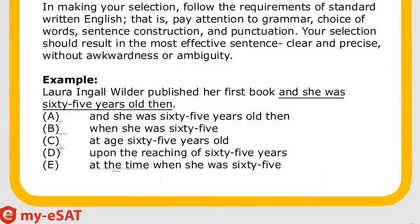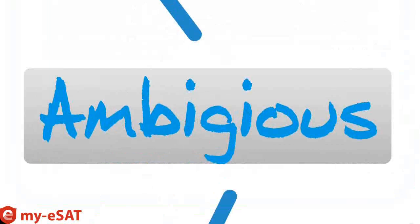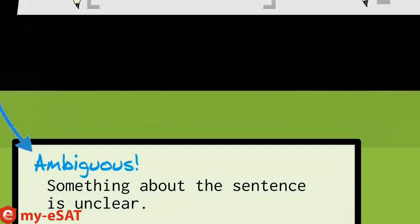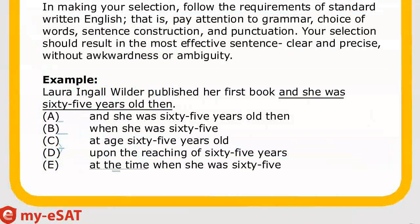Answer choices C and D are actually ambiguous. Ambiguous means there is something unclear about the sentence. Answer choice C and D don't tell you who is 65. Answer choice C says Wilder published her first book at age 65 years old — but who is 65, Wilder or the book? It's unclear. Same deal with answer choice D: Wilder published her first book upon the reaching of 65 years — but who reached 65, Wilder or the book? Again, it's unclear.